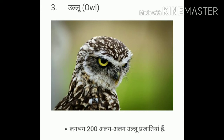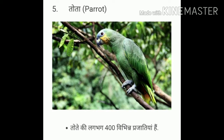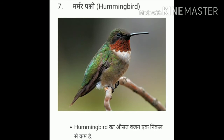Four, Mor — peacock. Five, Tuta — parrot. Six, Hans — swan. Seven, Murmur — hummingbird.